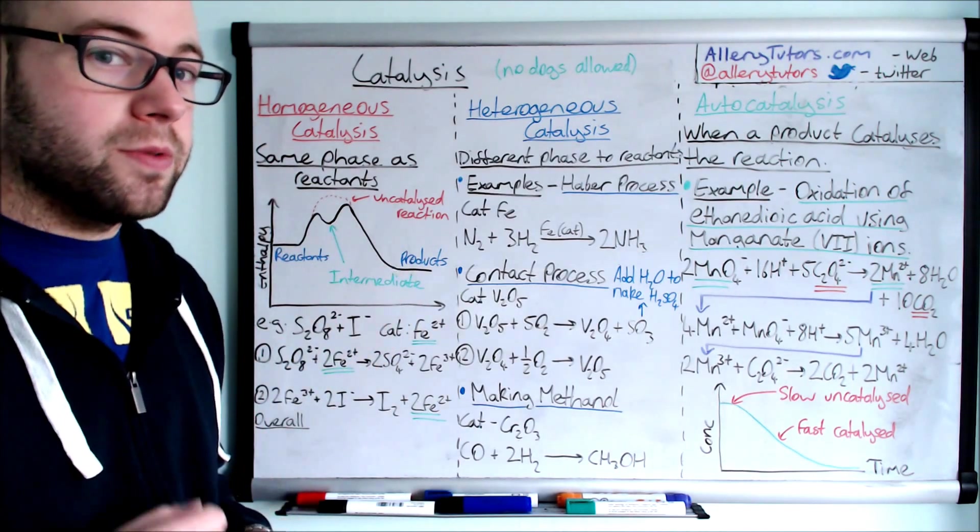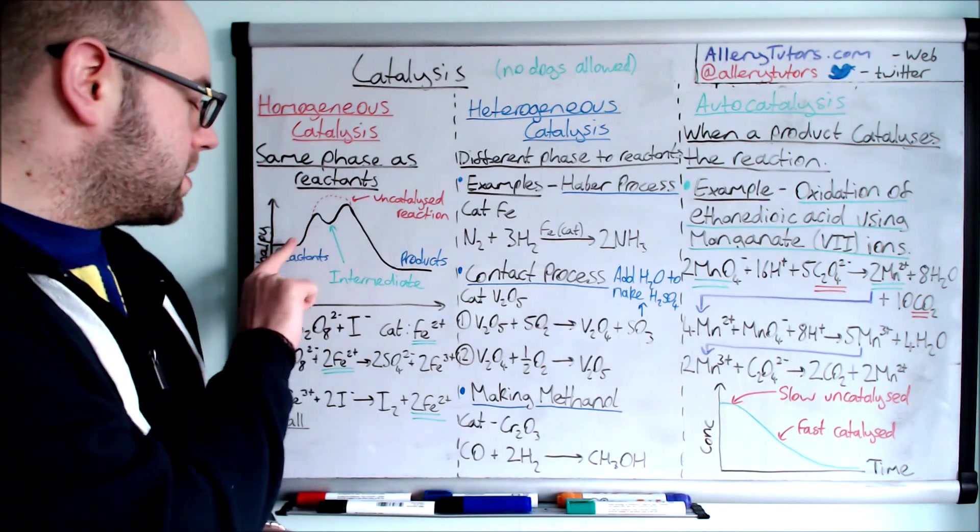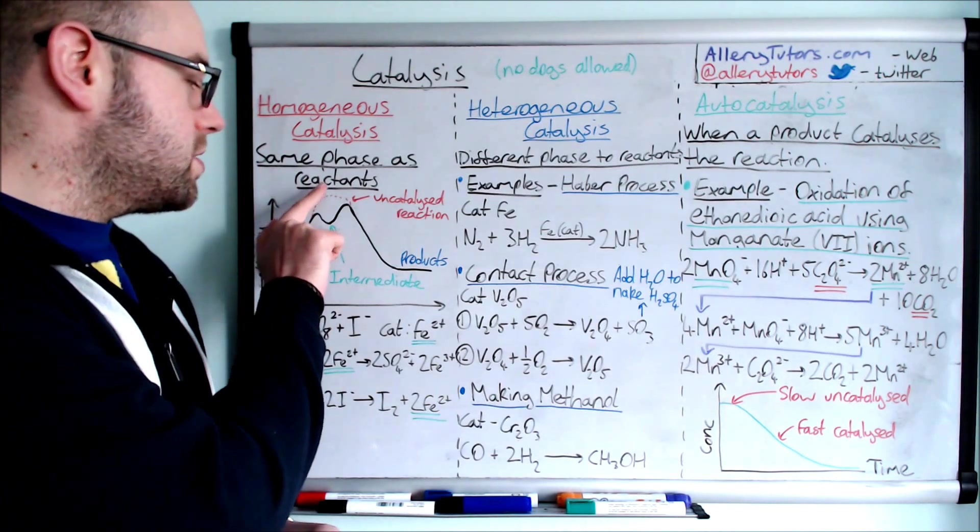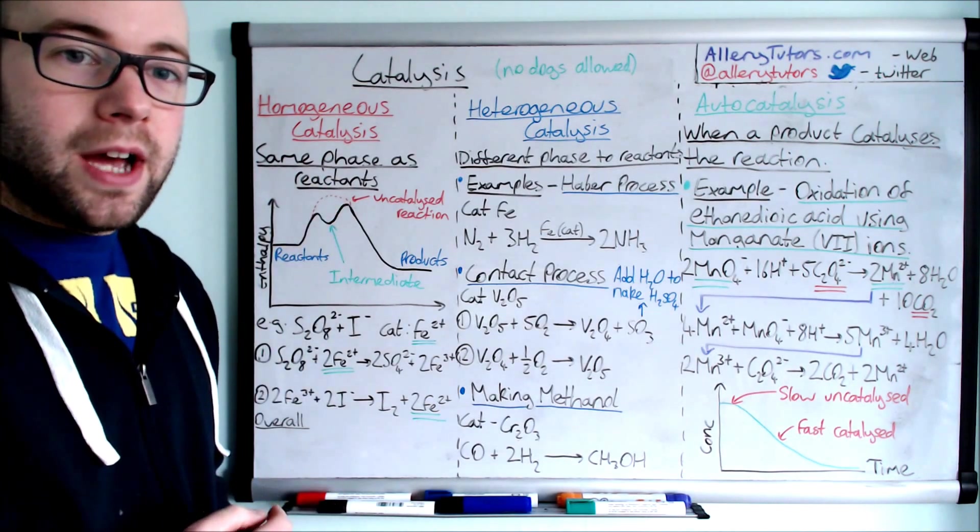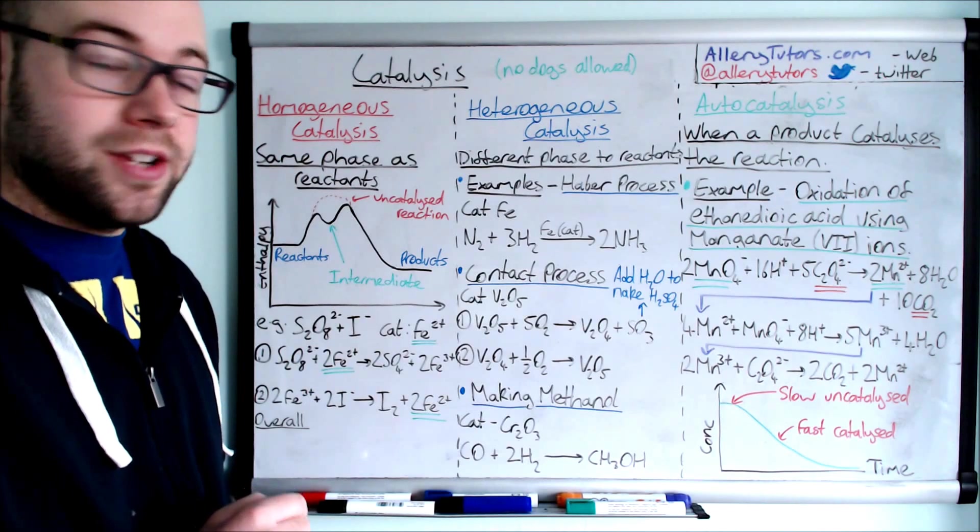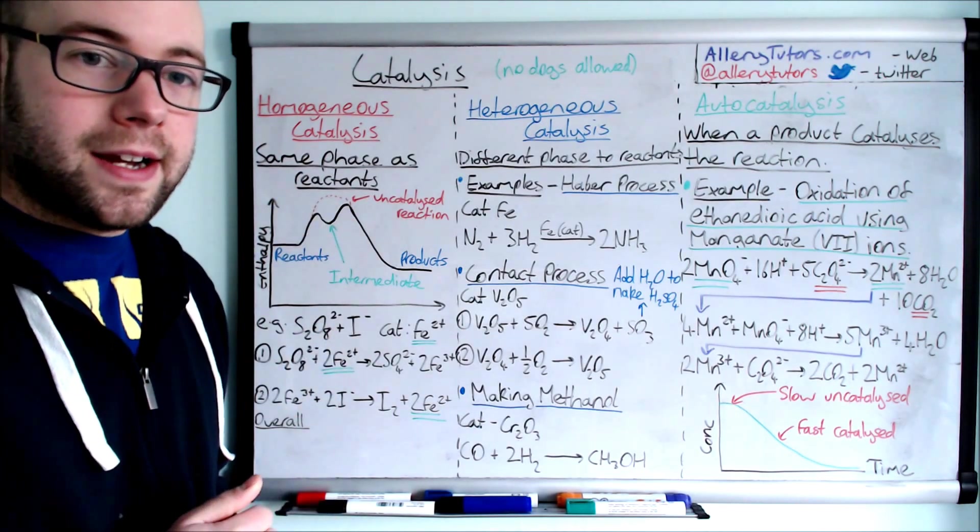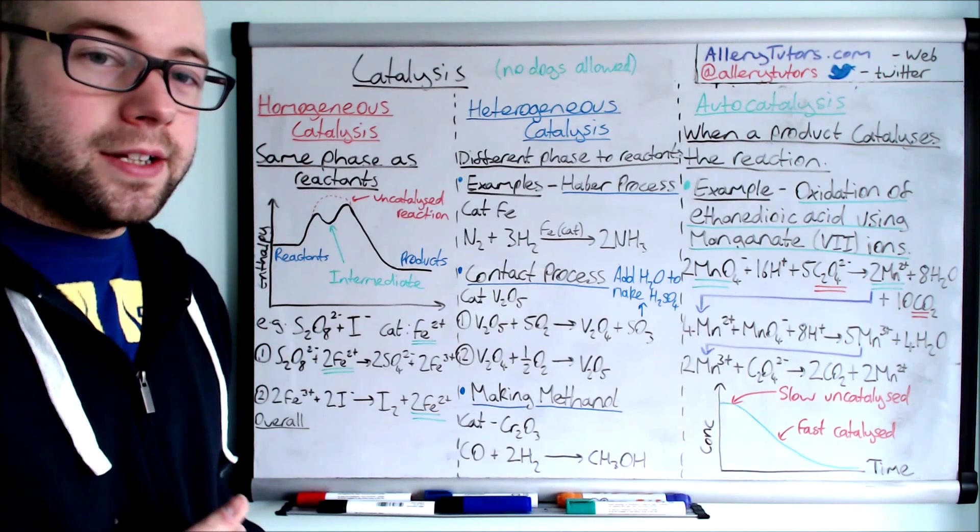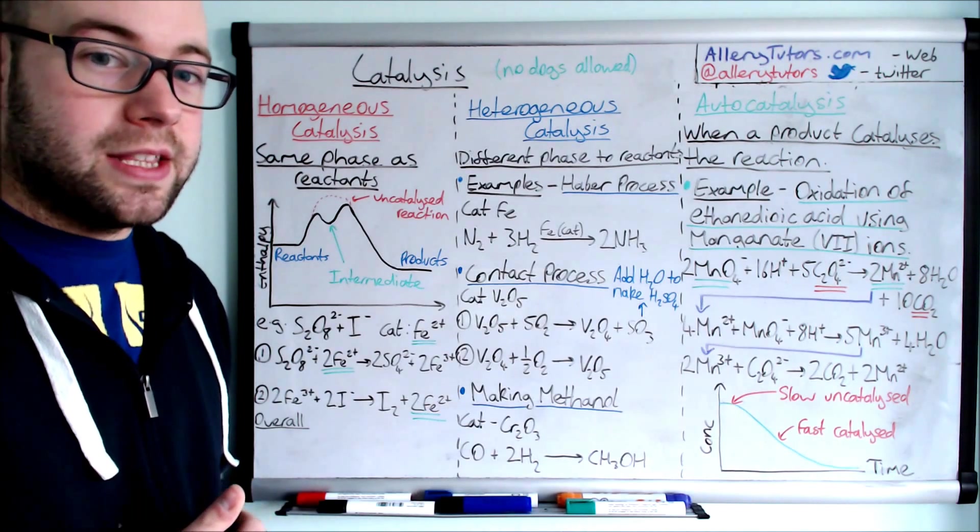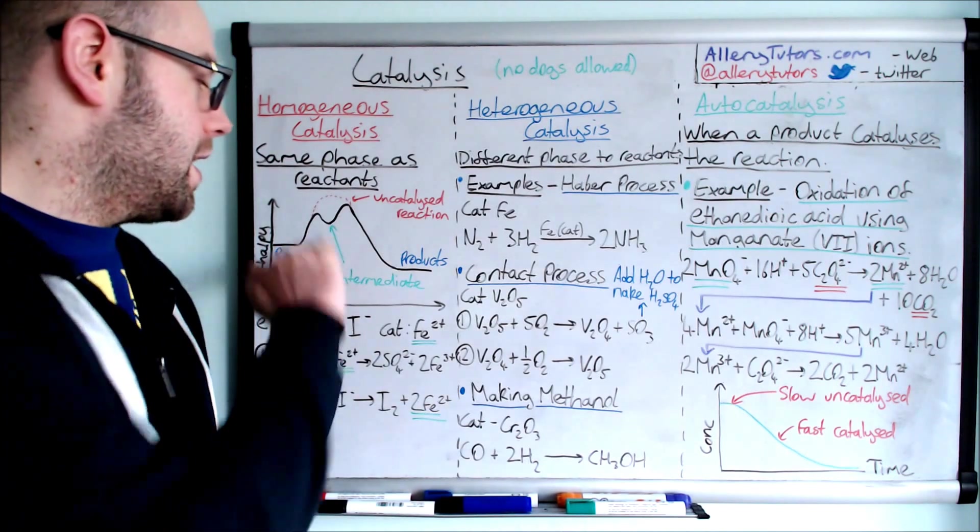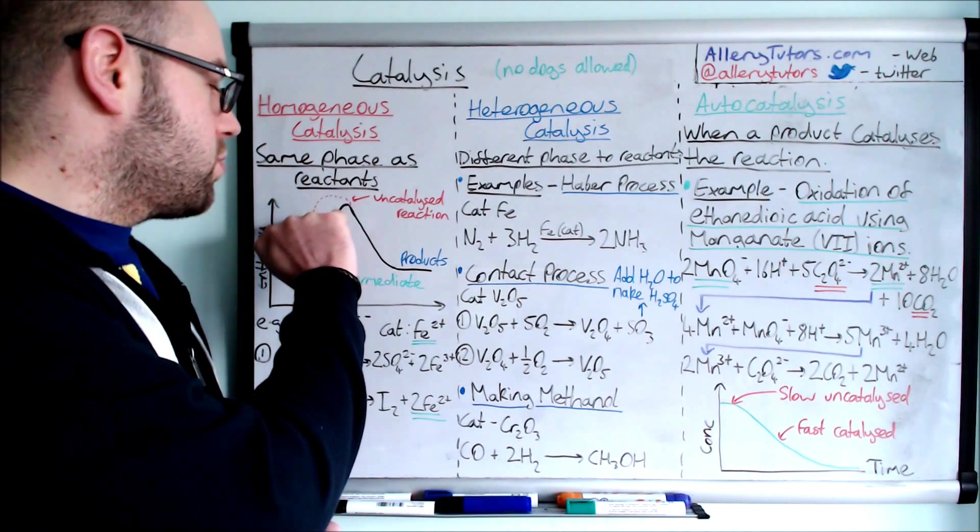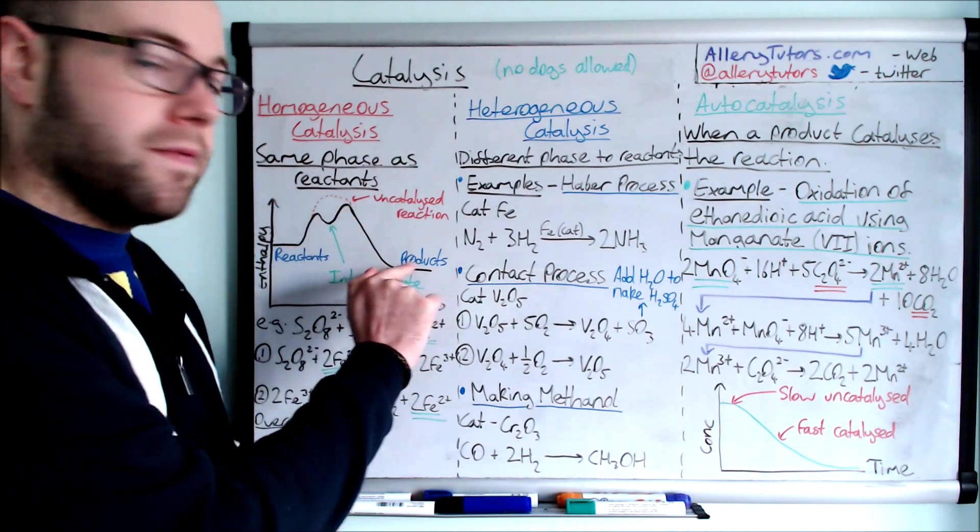Now if we had a reaction that was uncatalyzed, we need enough energy to reach the activation energy, which is the one right at the top here. If it's uncatalyzed, this activation energy is quite high, so we need to put more energy in. You see the red dotted line which shows the profile, uncatalyzed, and then forms the product.